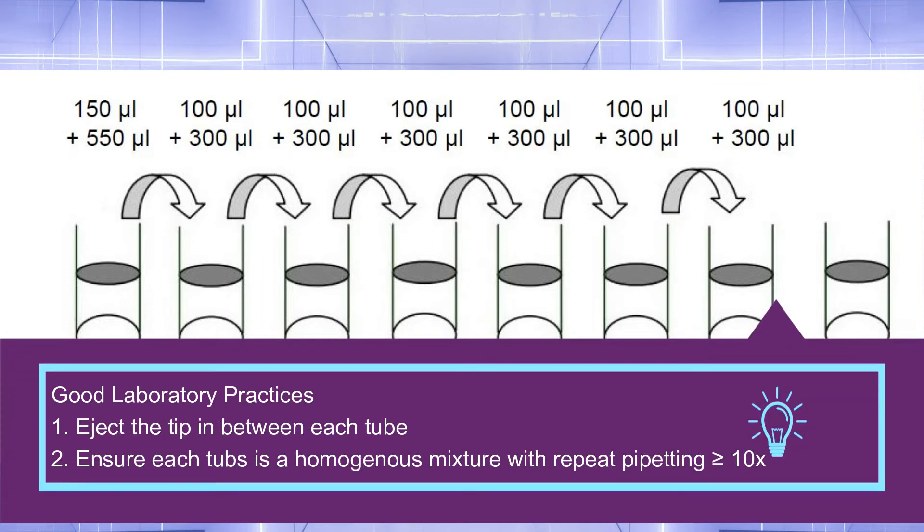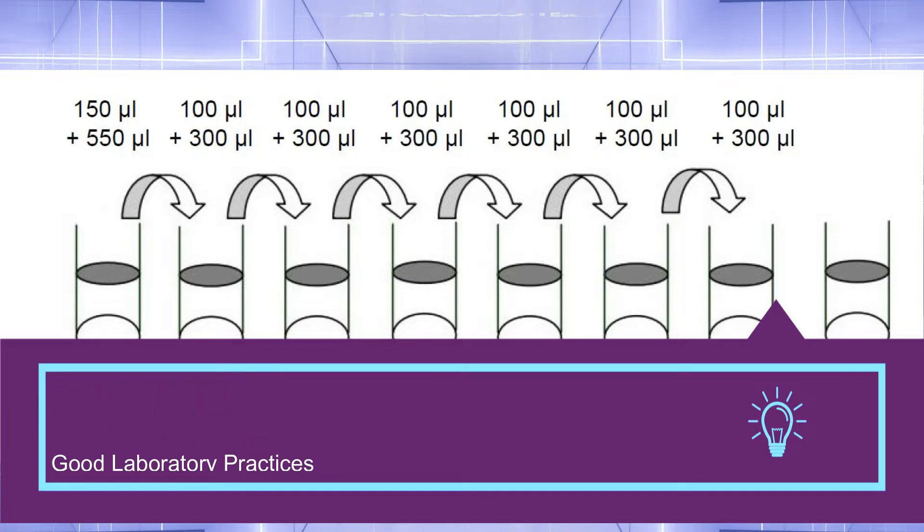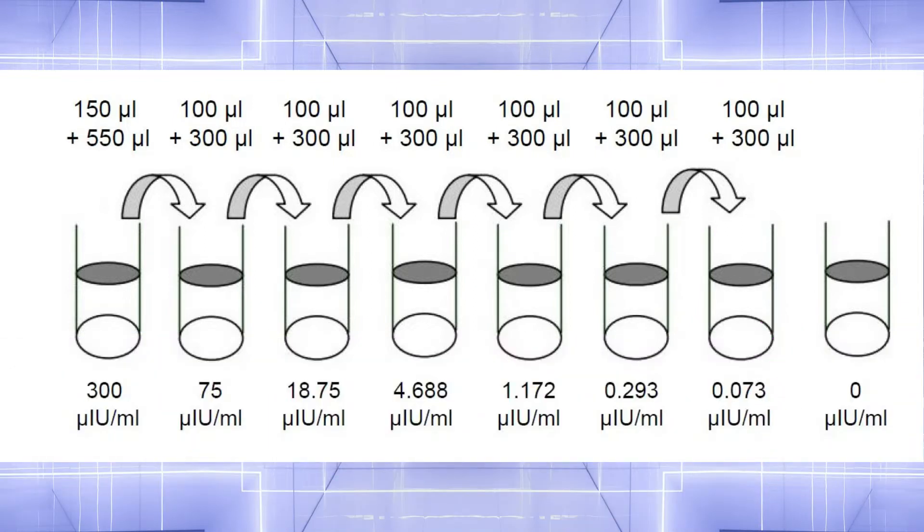When you perform this step, make sure you truly mix each mixture so it's homogeneous and eject the tip between each standard. This ensures we're reporting the correct concentration for the calibration curve. Don't passage any antigen into the zero. It's a true zero.